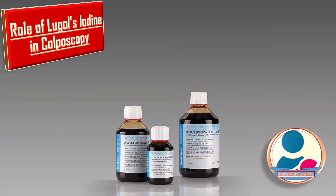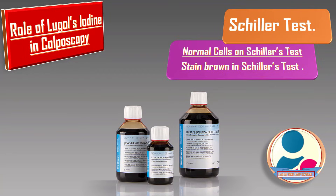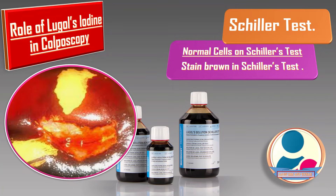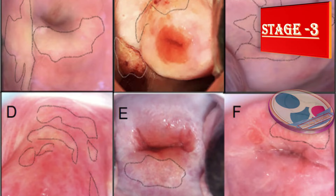Application of Lugol's iodine in colposcopy is called Schiller's test. Normal cells stain brown in the Schiller's test as they take up Lugol's iodine. Abnormal cells: mature squamous cells rich in glycogen stain dark brown, while dysplastic or glycogen-deficient neoplastic cells fail to stain and appear in various shades of yellow.